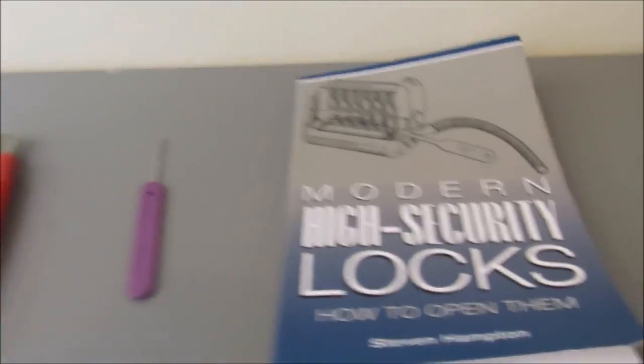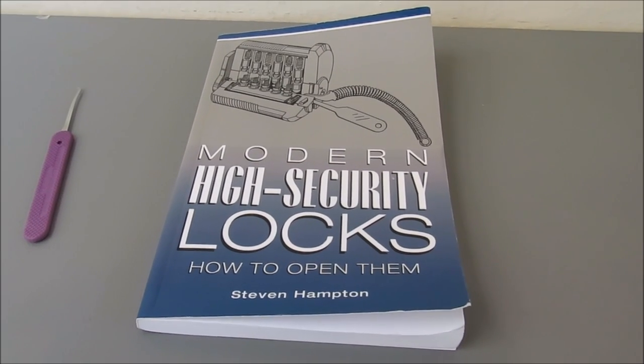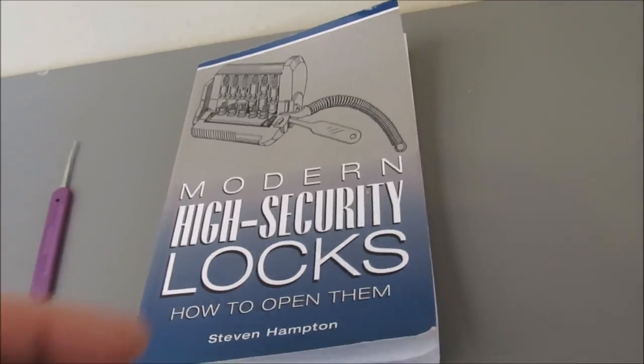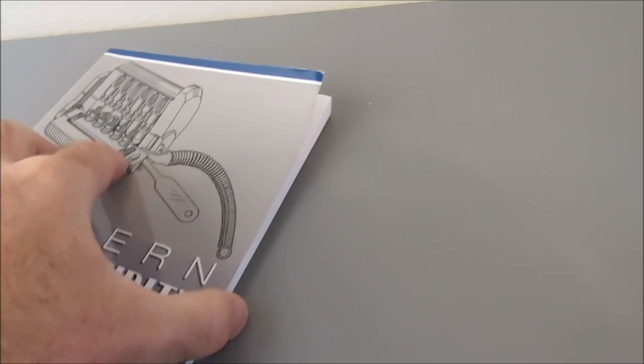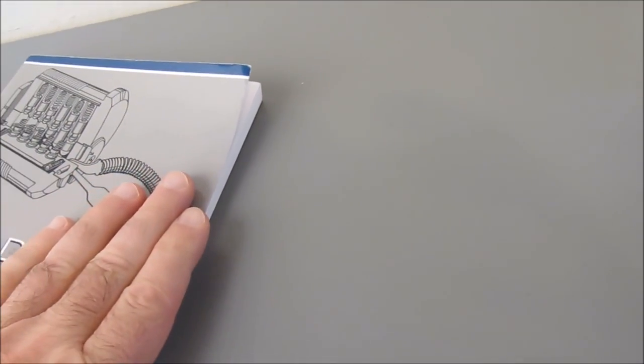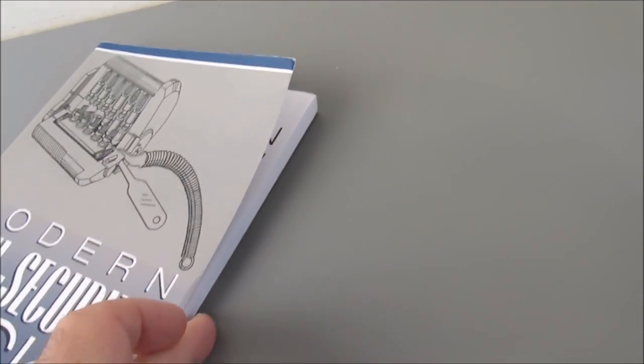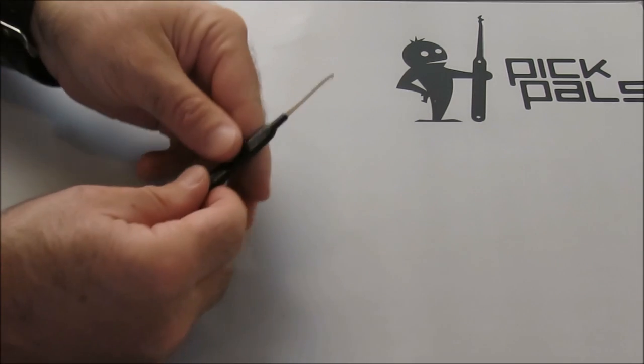Next thing we've got is a book. Any paperback book will do. You want a paperback so that you don't want a hardback because the hardback covers poke out further than the pages. You want to be able to get flush with the side here. That's why we're using a paperback book.